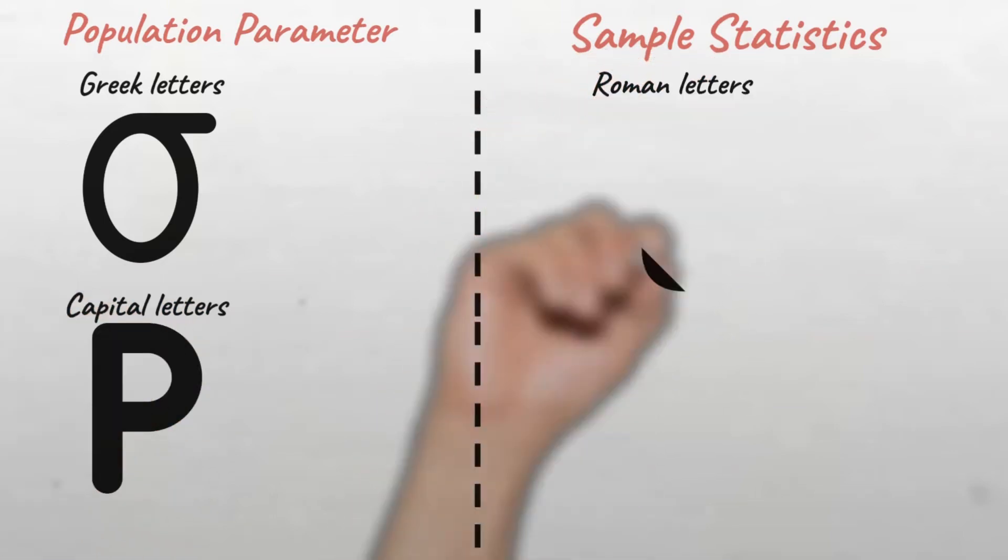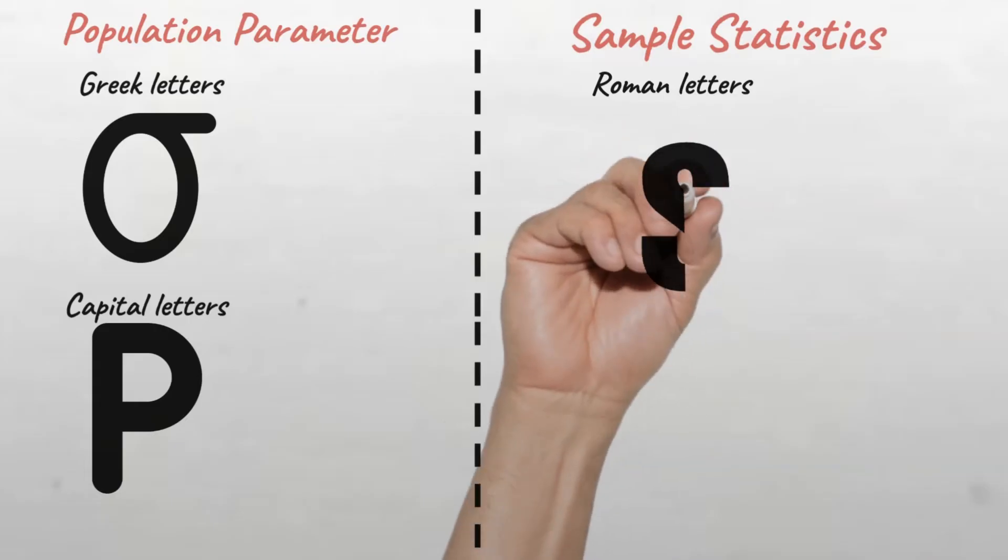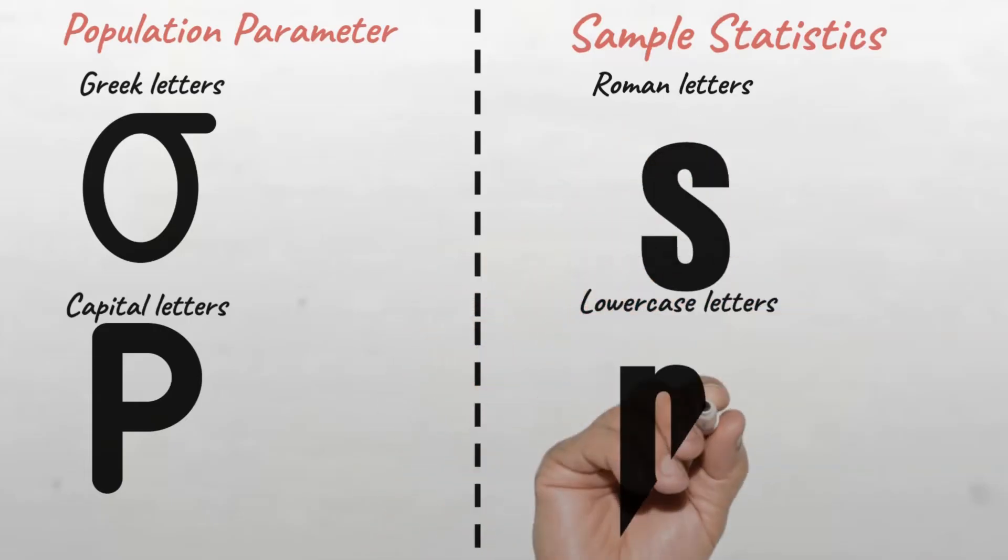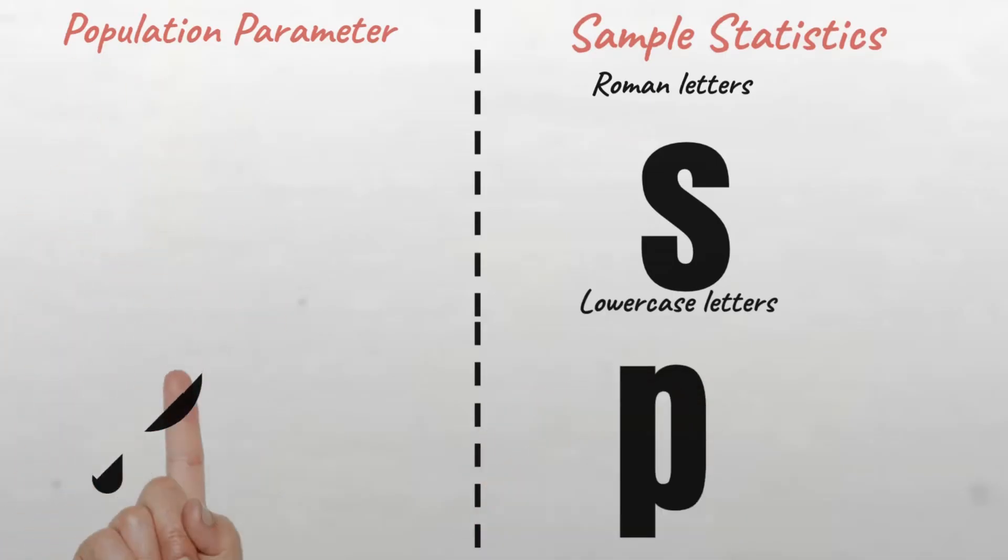While statistics are usually Roman letters, for example S. And in most cases, when you come across a lowercase letter, for example lowercase p, then you're most definitely sure that it is a statistic.